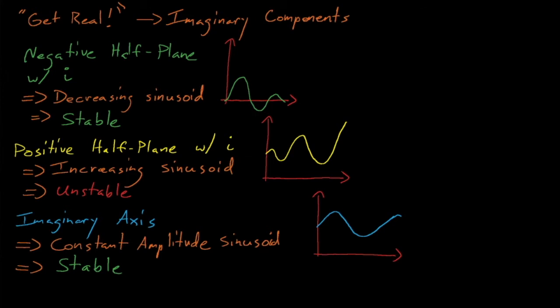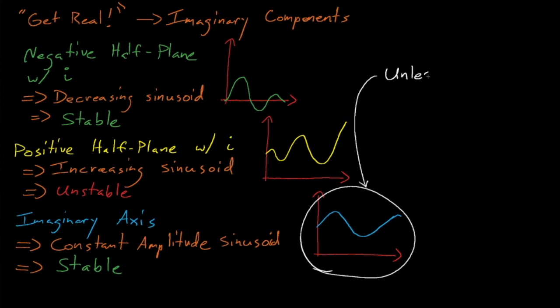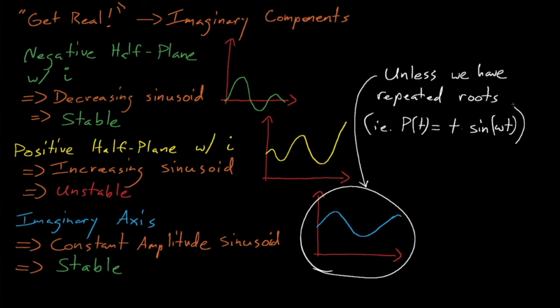Just as before, any repeated zeros on the imaginary axis will cause the system to become unstable because they add a power of t in front of our constant amplitude sinusoid.